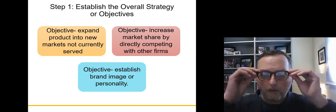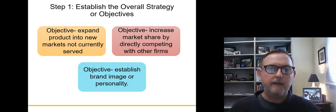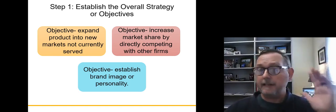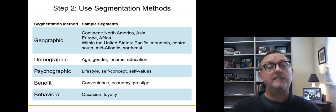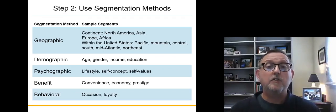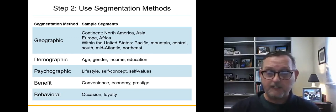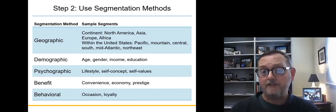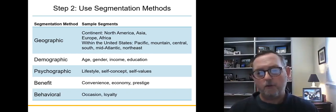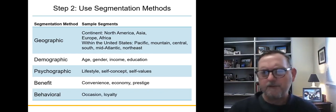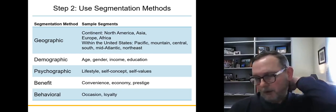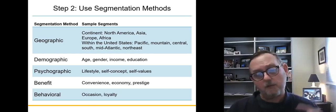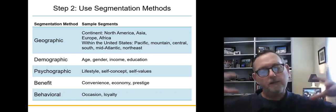Before we start, think about what you want to accomplish — what do you want to have happen as a result of doing this activity? Moving forward, we jump into step two: employing segmentation criteria. There are five segmentation methods mentioned here. Sometimes you'll see four, but these are the big ones that marketers use a lot to segment or split up a market.